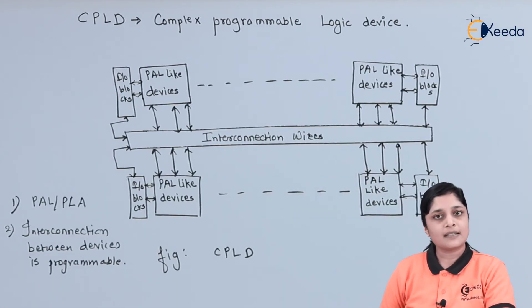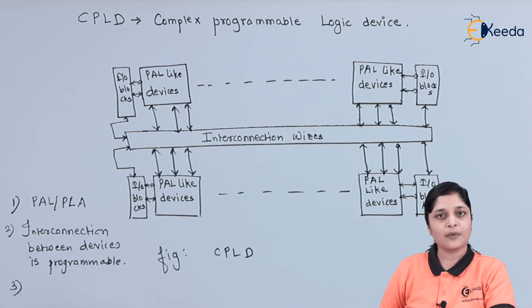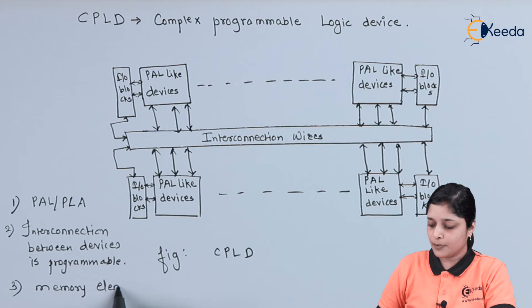So small digital systems can be realized using CPLDs. And the memory elements we have to use here are flip-flops. Memory element we are going to use here is FF, that is flip-flops.